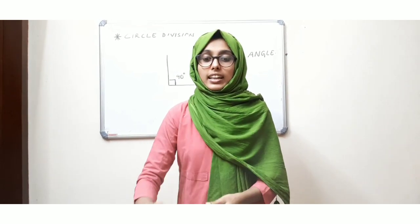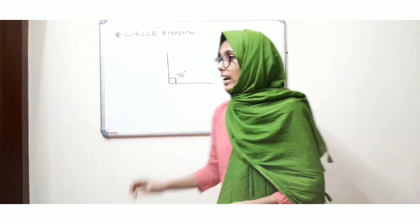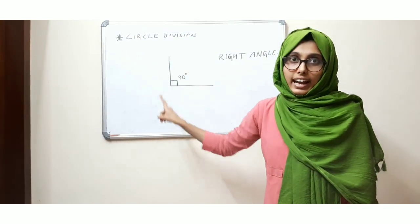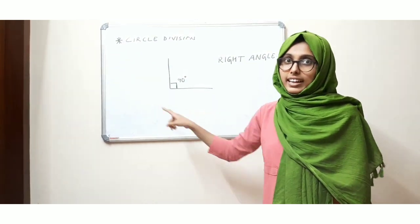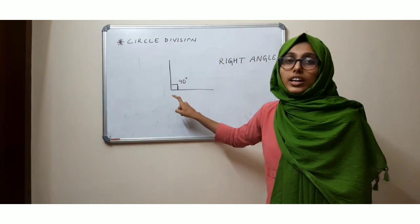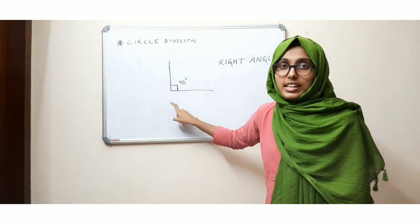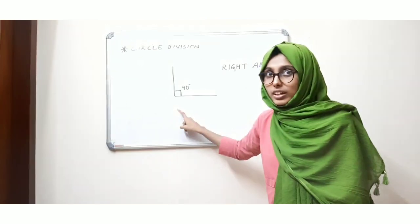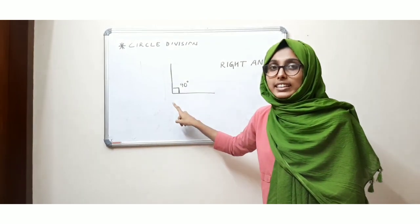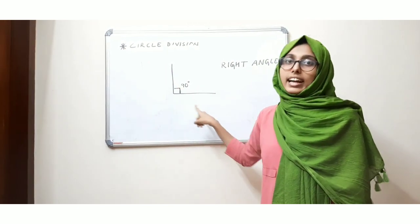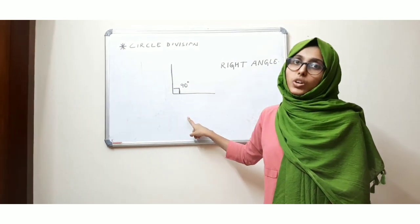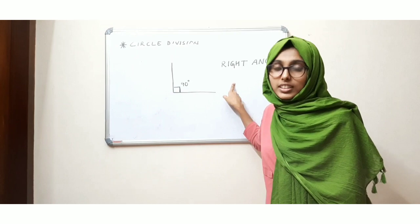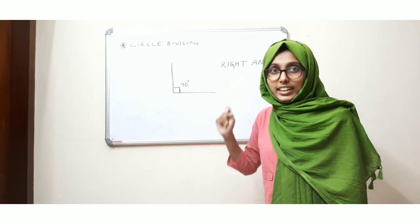Here I have drawn an angle. This square corner is 90 degrees. Such an angle — a 90-degree angle — is called a right angle.